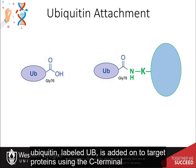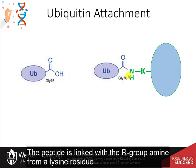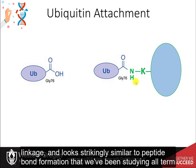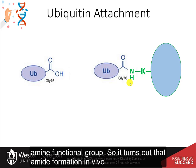Ubiquitin, labeled UB, is added onto target proteins using the C-terminal carboxylic acid functional group, which happens to be a glycine residue. The peptide is linked with the R-group amine from a lysine residue on the target protein that will end up being degraded. This forms an amide bond linkage, which looks strikingly similar to peptide bond formation, except that the amide bond is formed with an R-group amine rather than with a main chain amine functional group.